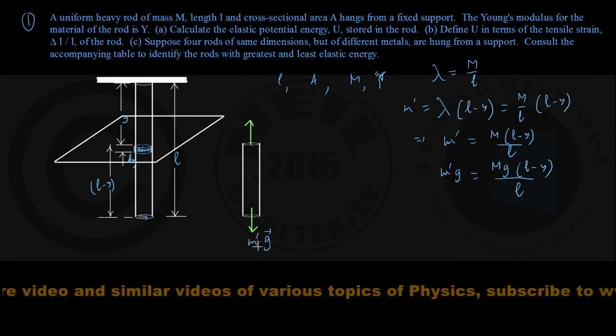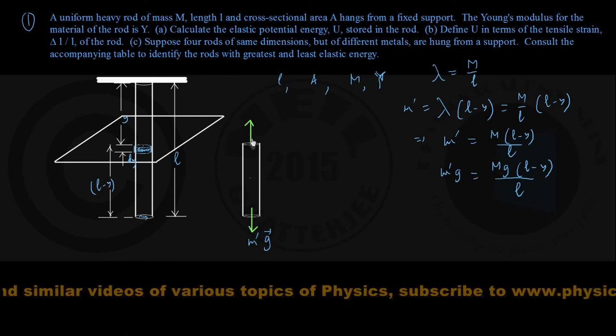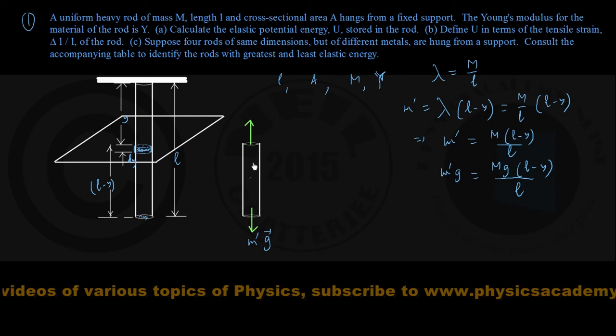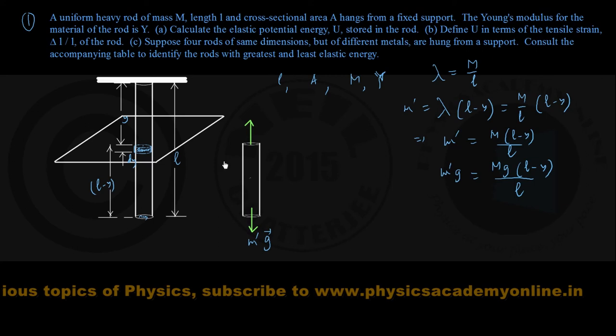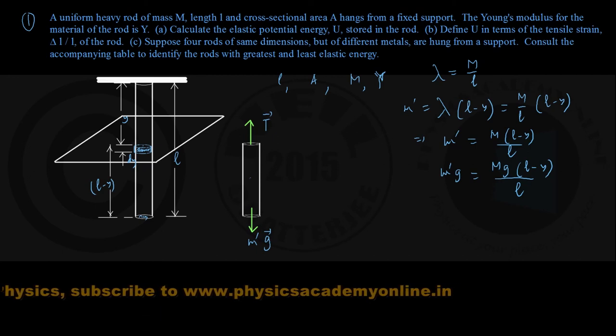Once we understand this force of gravity acting on this lower part, we can argue that since this lower portion is also in equilibrium, that means the tensile force acting upward at this cross section must be having the same magnitude.